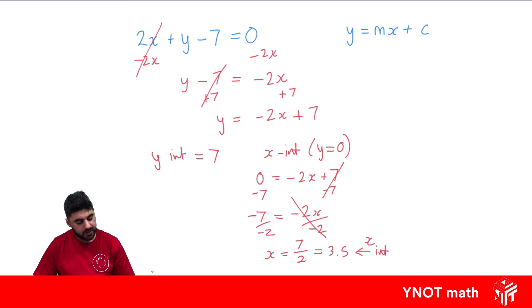That's our x intercept. And now we know the two intercepts. We can easily graph the line on our Cartesian plane. So if the y intercept is 7, we know it's somewhere up here. And the x intercept is 3.5, which is somewhere over here. I'm going to write it as a fraction, 7 over 2. And all we have to do is join up the y intercept and the x intercept. And we have our graph of the straight line.